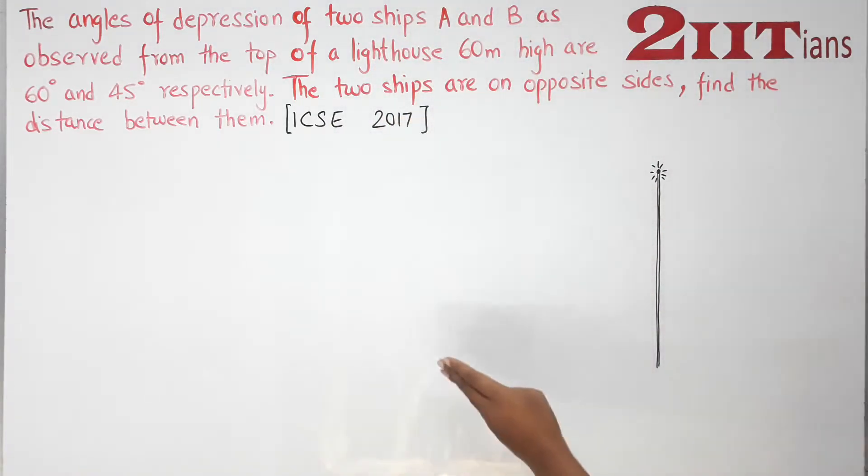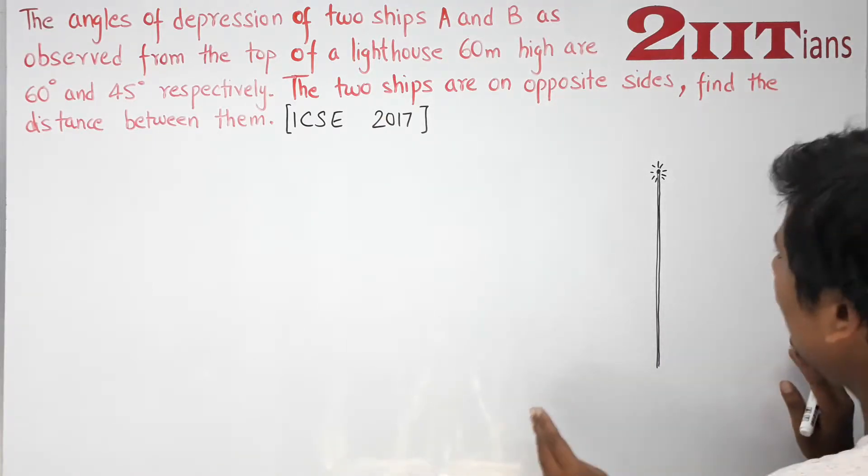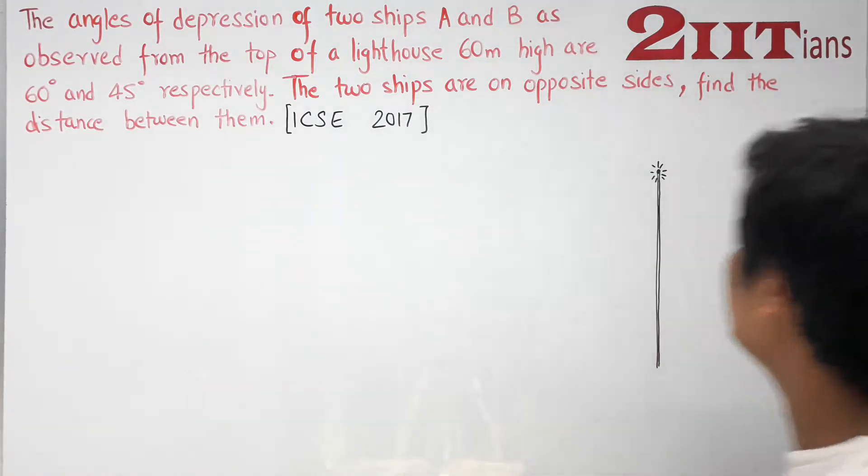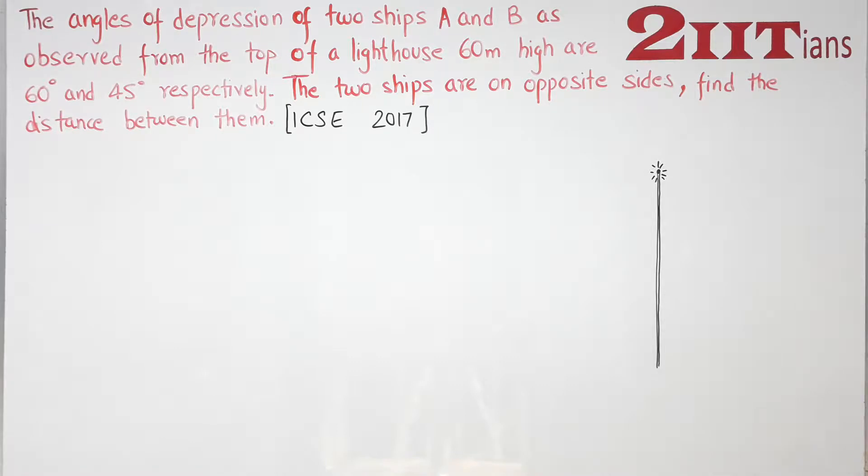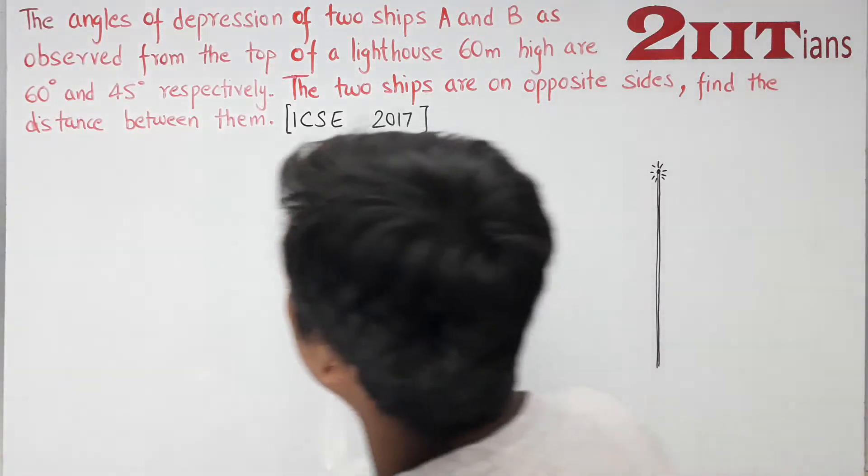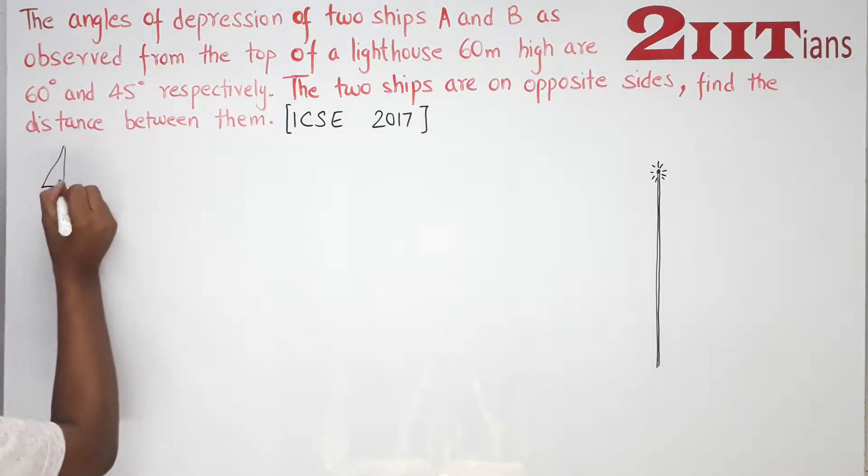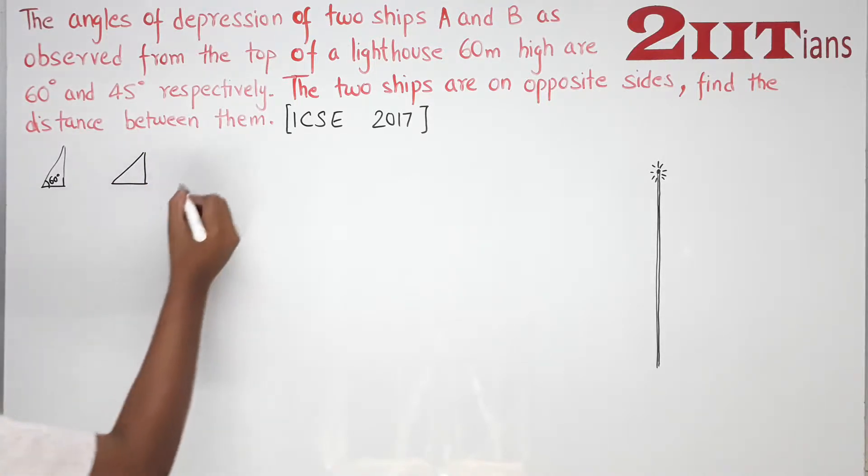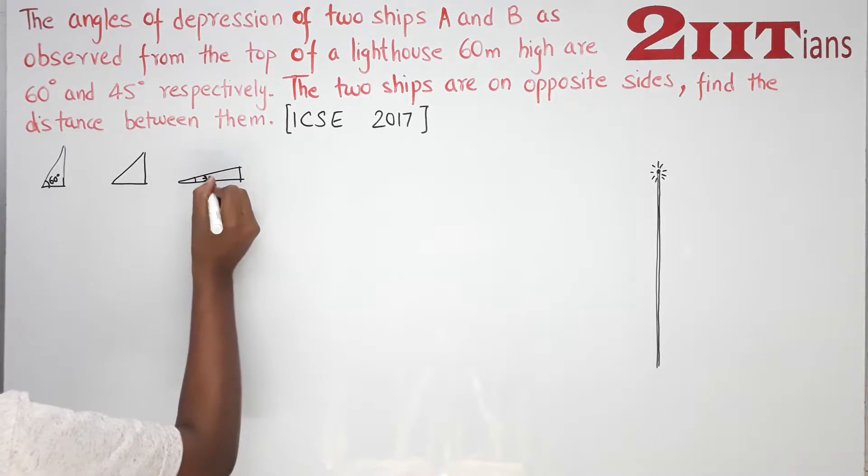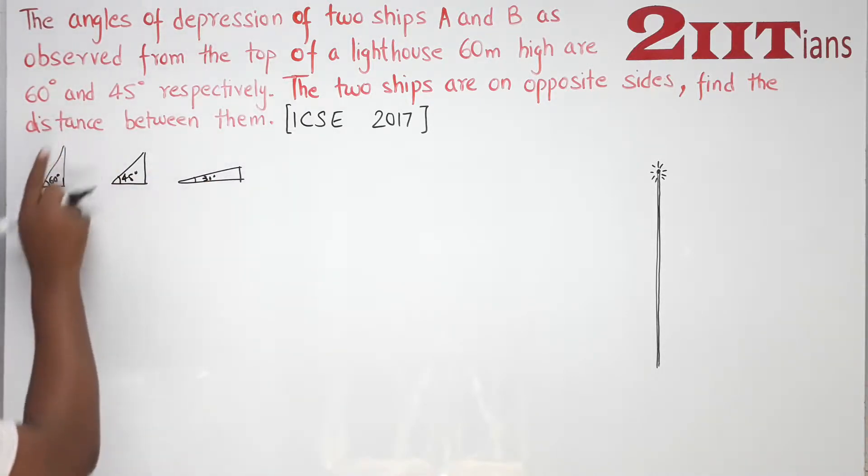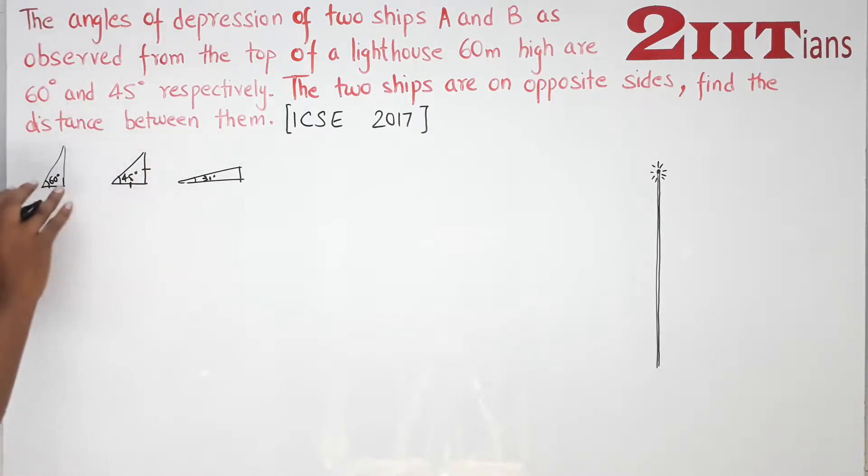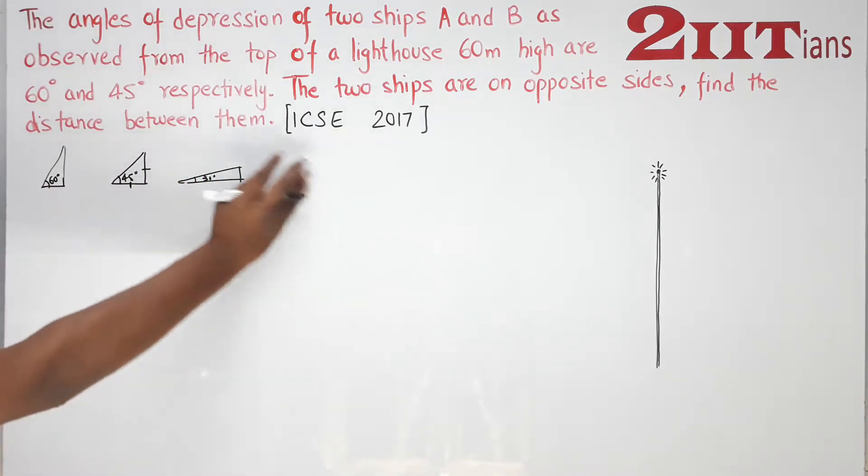This is how I always taught you: when you make a triangle of 60 degrees, you can make this type, and for 45 degrees, you can make this type. For 30 degrees, you can make this type. This is a realistic picture model.